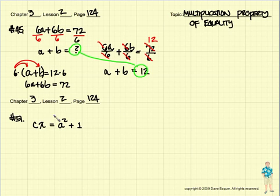Let's try number 51. Let's solve this one for x. This looks very confusing, but let's rewrite this a little more simply. c times x is equal to a squared plus 1.